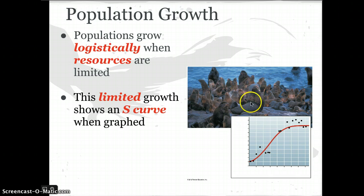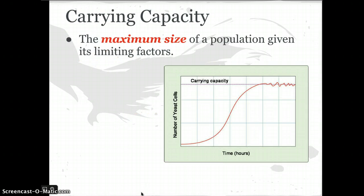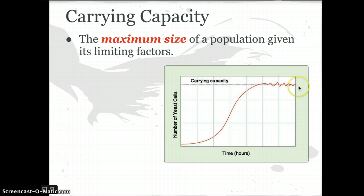Looking at this image — the limiting factor here is probably space: space to rest, or food found very close to shore during mating season. We can graph populations and see that most populations respond to a carrying capacity, or the maximum size of a population given its limiting factors. This is the maximum size of a population that the environment can support. Whether you're a rabbit, a seal, or a tree, the environment can only give so many individuals what they need.